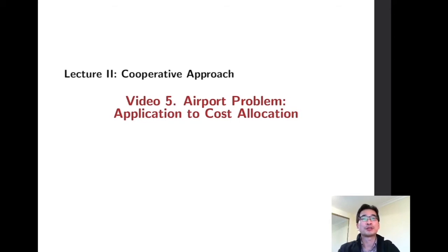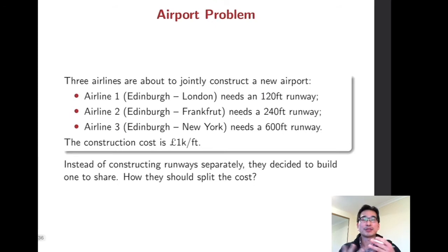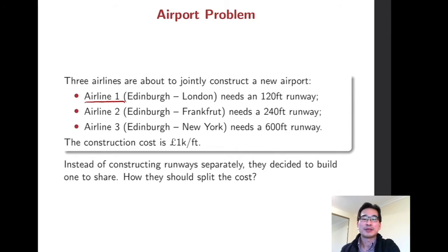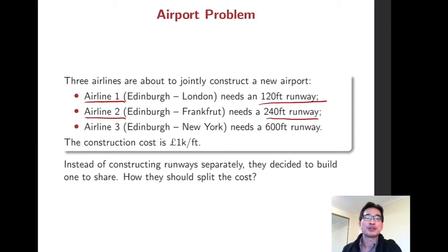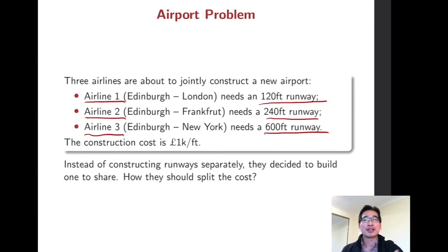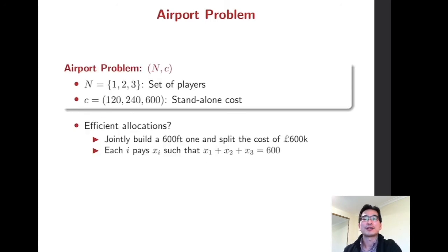In this video, I'm going to introduce an airport problem as a simple application to cost allocation. Think about this hypothetical situation: we have three airlines and they are going to construct a new airport jointly. The small airline company needs a 120-foot runway, Airline 2 requires a 240-foot runway, and the larger one requires a 600-foot runway. Instead of constructing runways separately, they can save some cost by building one and sharing it. The question is how they should split the cost — this is the airport problem.